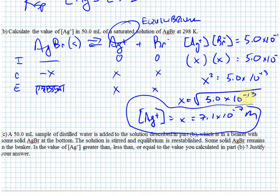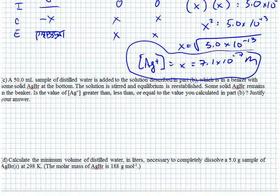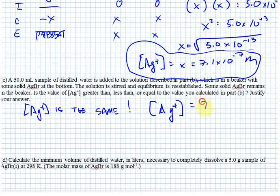The bromide ion concentration is also 7.1×10⁻⁷ molar. Now, if we take that saturated solution and add 50 mL of pure distilled water, stir it, and re-establish equilibrium — with solid silver bromide still present at the bottom — is the silver ion concentration greater than, less than, or equal to before? More silver bromide dissolves, but the volume increases. The silver ion concentration remains the same, determined by the equilibrium constant.